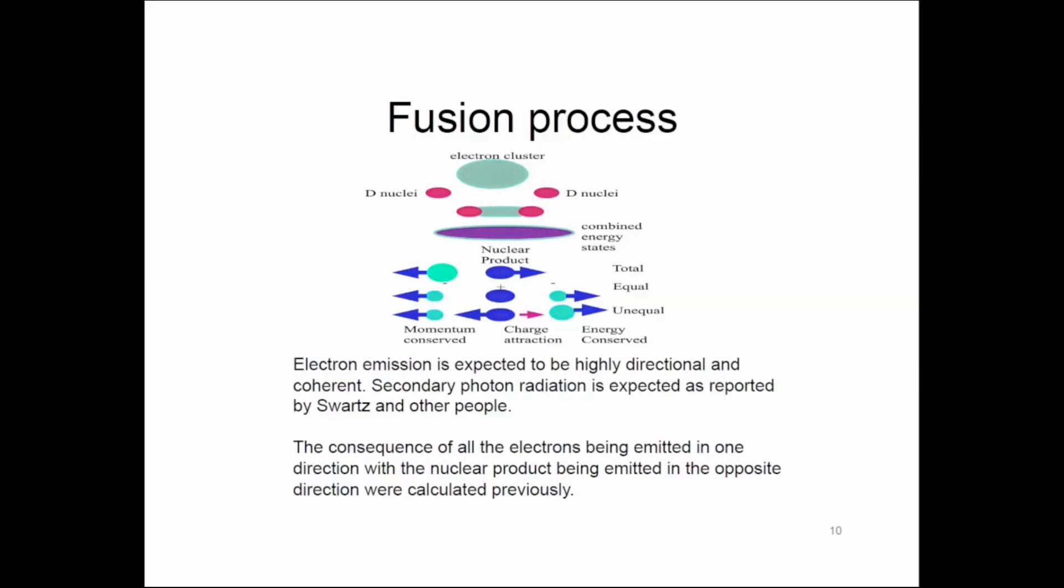One way is for all the electrons that are in that structure to go off in one direction, and the nuclear product, helium, to go off in the other direction. I explored that particular model in a paper that's already been published. It makes it possible to calculate the number of electrons and their energy, but it does not fully explain the behavior of the energy that has been measured for the nuclear product.